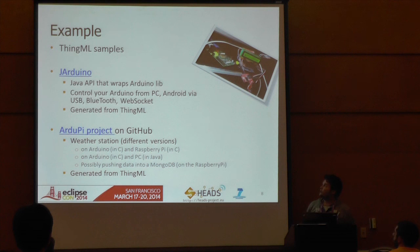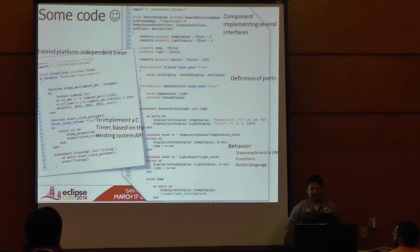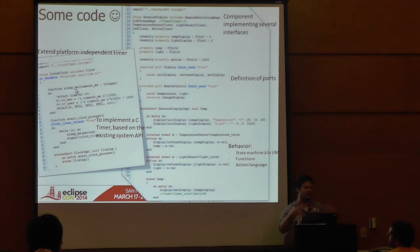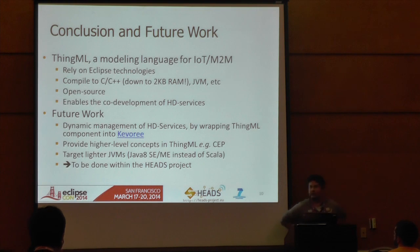Here are a few examples implemented in ThingML — you can look at more on our GitHub. This shows some ThingML code: a component implementing a set of interfaces, with logic described as a state machine in textual form. And here is a small example of how we integrate a C library within ThingML, using an operator that allows mixing C code with ThingML code. That's pretty much it.